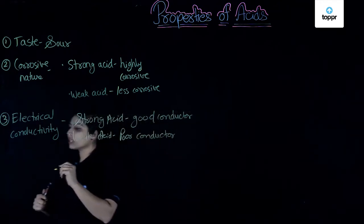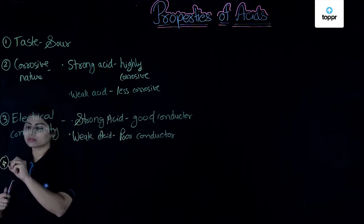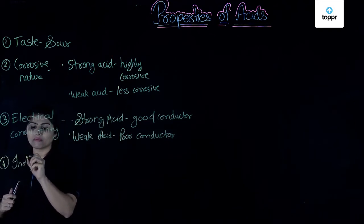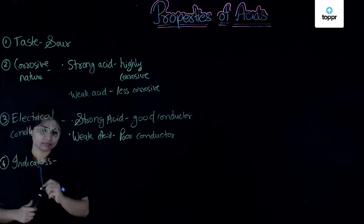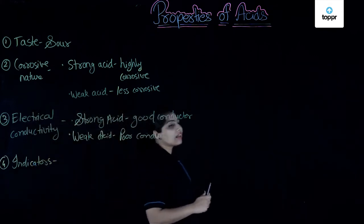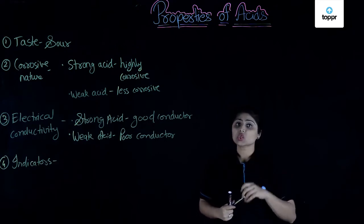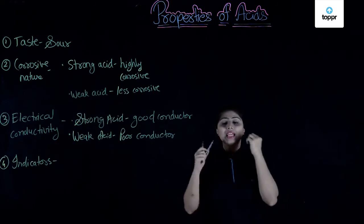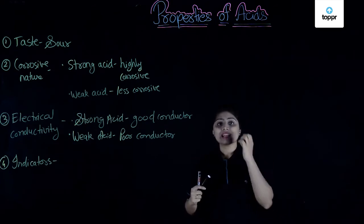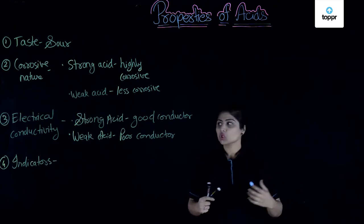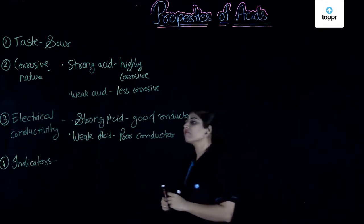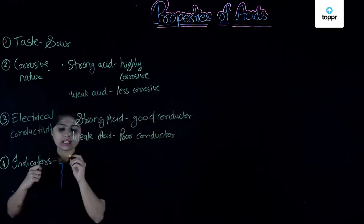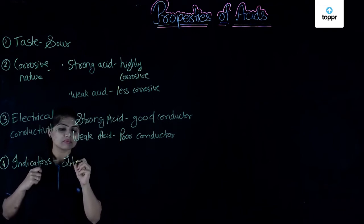Now, the next thing that we talk about is the effect of an acid on indicators. What are indicators? They are nothing but some dye powders which are used to identify if a substance is acid or not. It changes its colour in an acidic or a basic medium. When we talk about indicators, the very common indicator that we have around us is litmus.